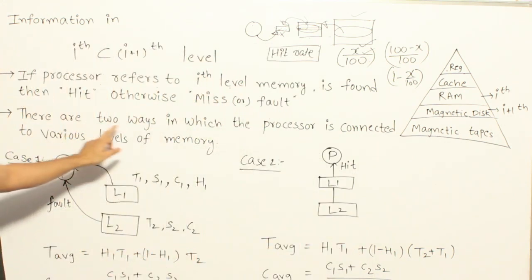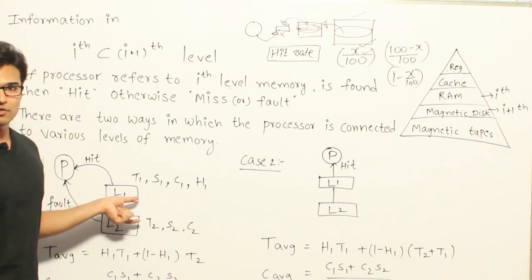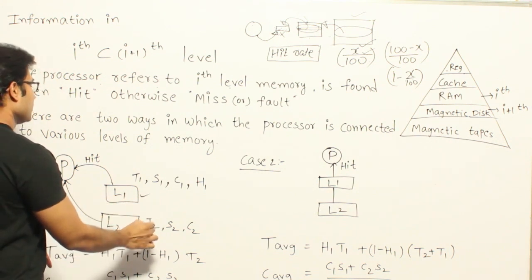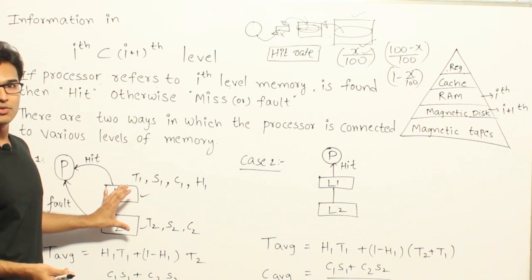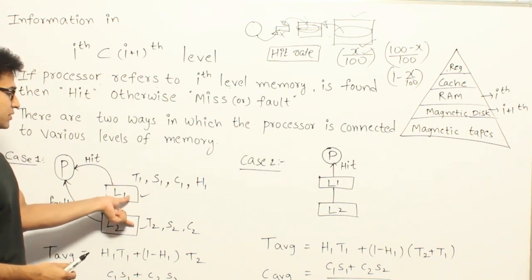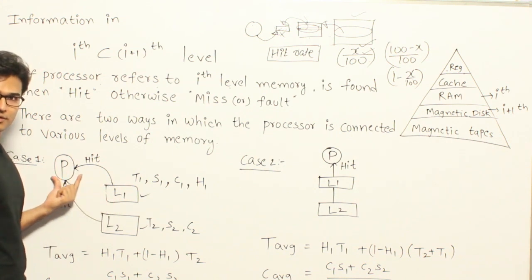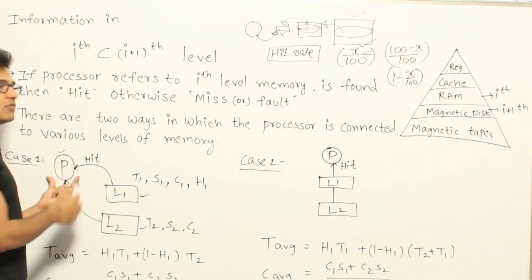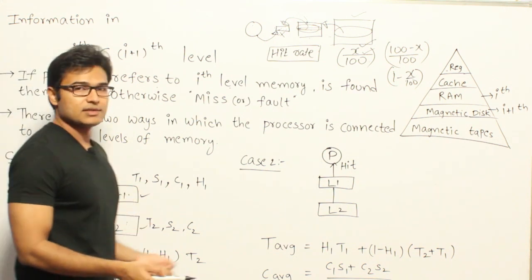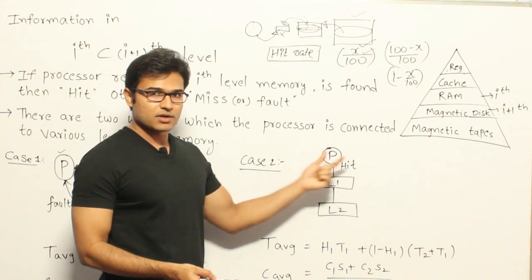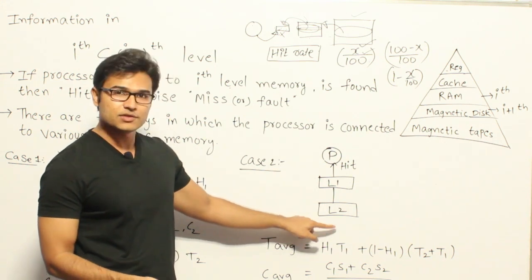There are two ways in which a processor is connected to various levels in the memory. We shall take an example where we have two levels of memory: L1 level and L2 level, which can be cache and main memory respectively, but this can be extended to many levels. One way is that all the levels may be simultaneously connected to the processor, and whenever the processor wants some word, it will start looking into these levels simultaneously. The other way is to first ask L1, and if not present, go to L2, then L3, and so on to LN.